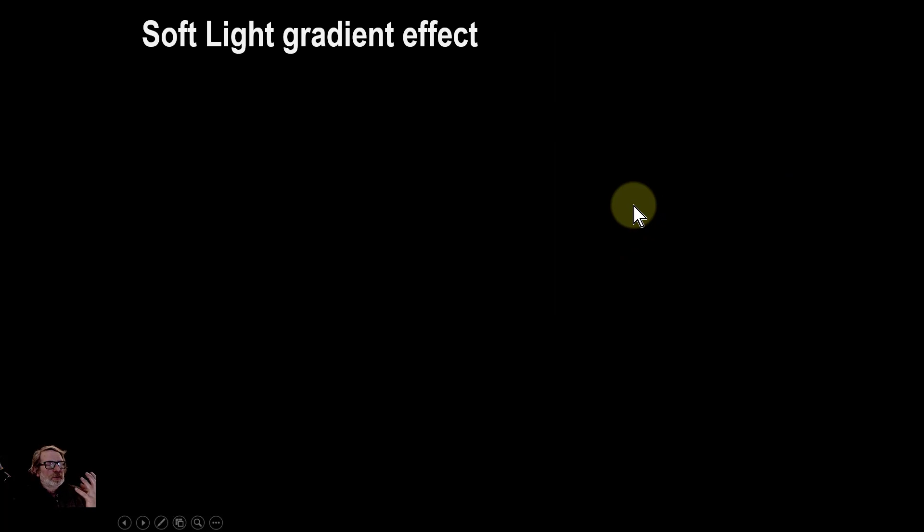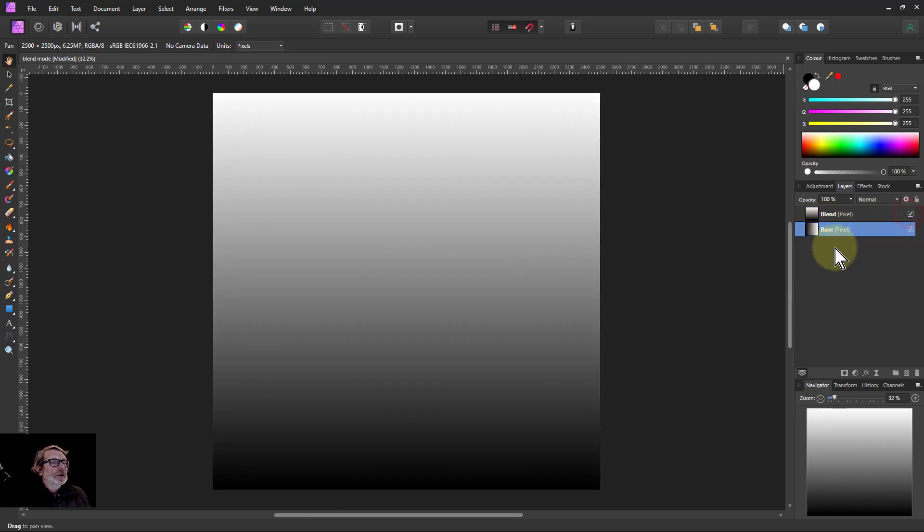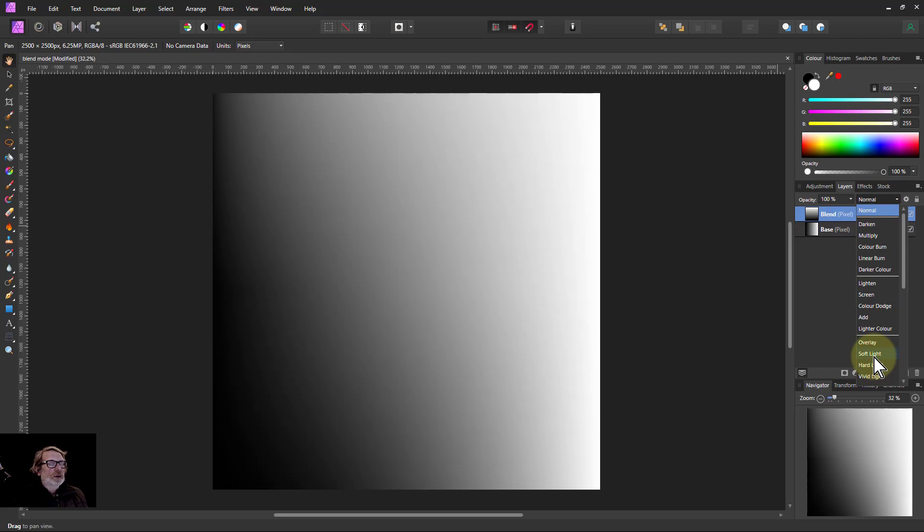There's a gradient way of looking at this and let's do this with Affinity Photo. So let's take the base layer here, which goes from 0 to 1 across here, or from black to white. The blend layer on top goes in the vertical direction, so it's like the Y going from 0 to 1.